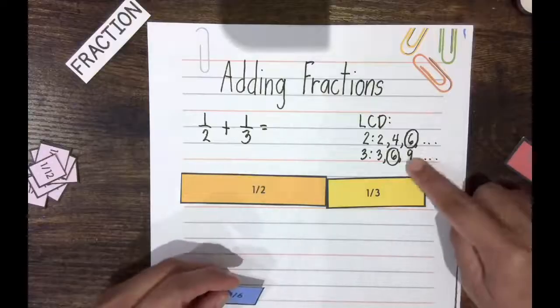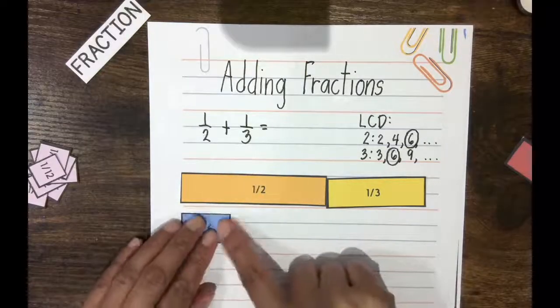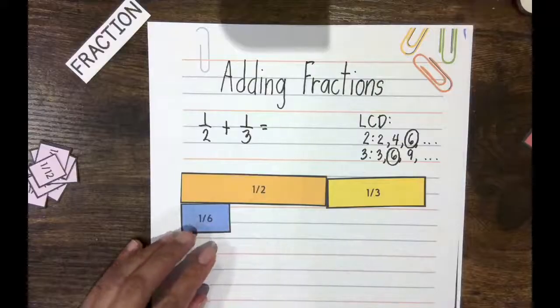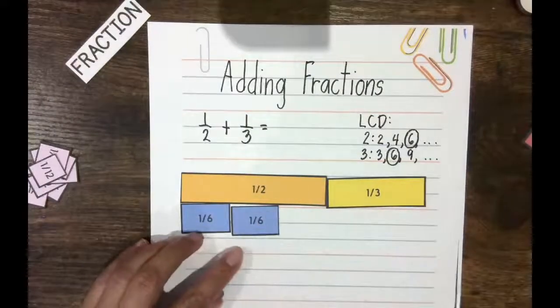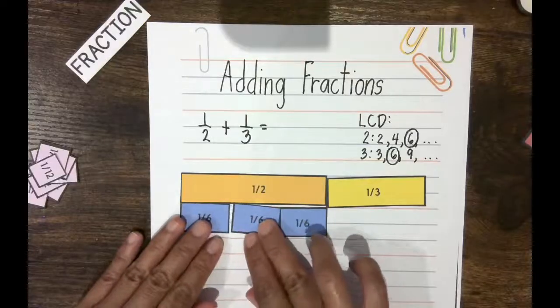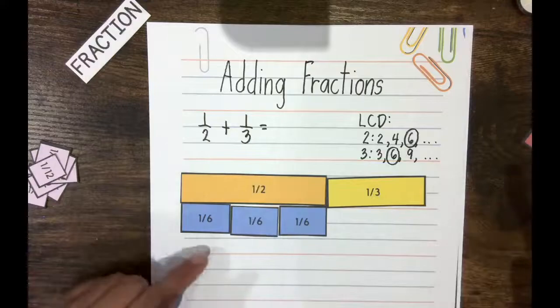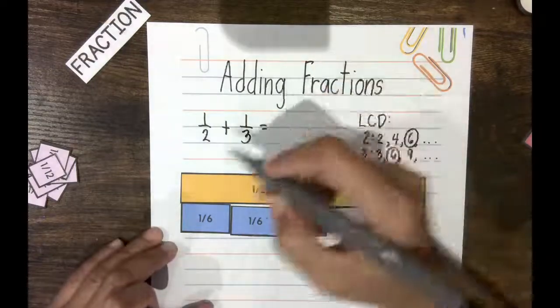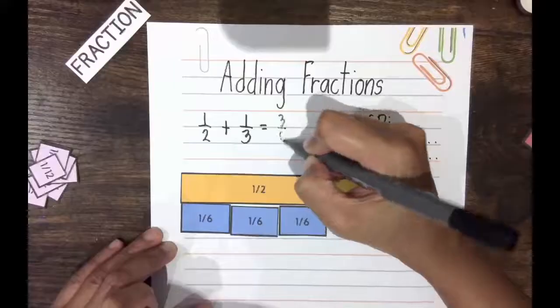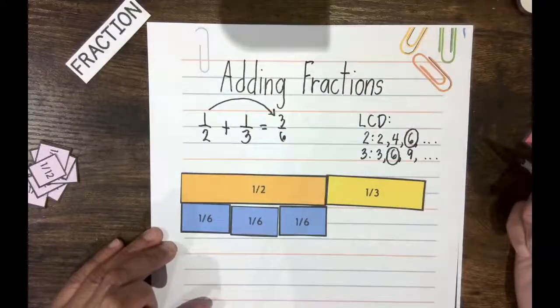Since 6 is their common denominator, that means I can express 1/2 as sets of 1/6. By using the tiles I can figure out how many 1/6 I need to make 1/2. See, I need 3 pieces of 1/6, which means 3/6. So, this is 3/6, and that is that 1/2.